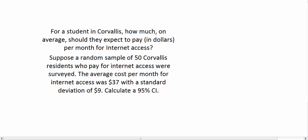Suppose a random sample of 50 Corvallis residents who pay for internet access were surveyed. The average cost per month for internet access was $37 with a standard deviation of $9.